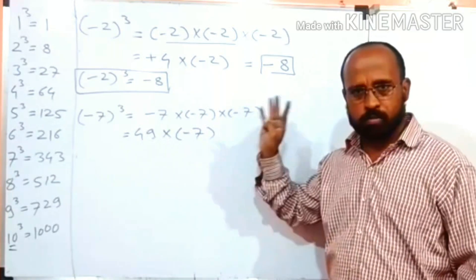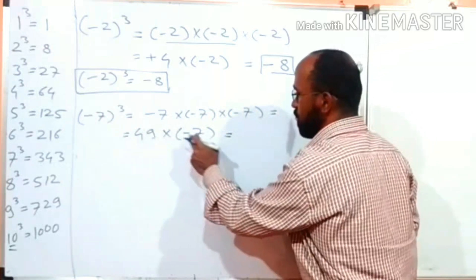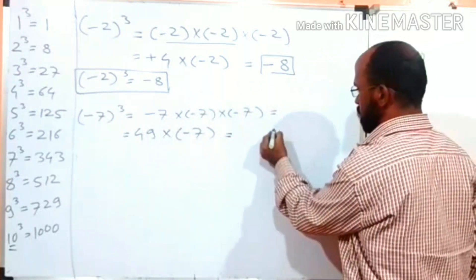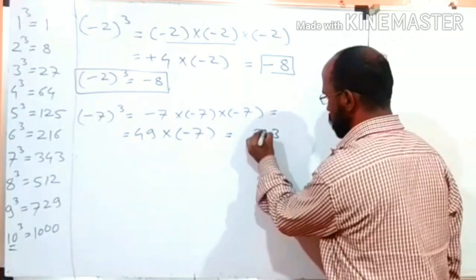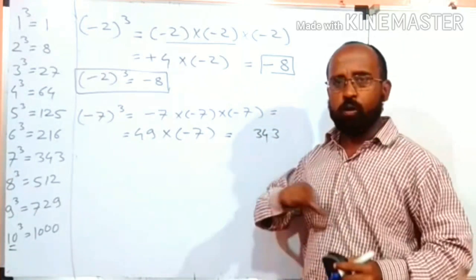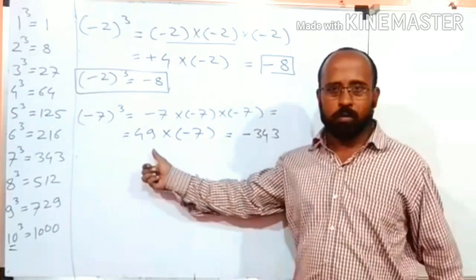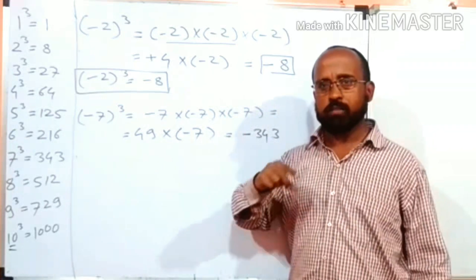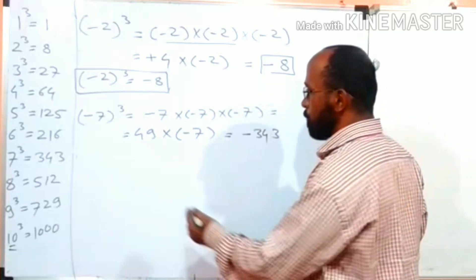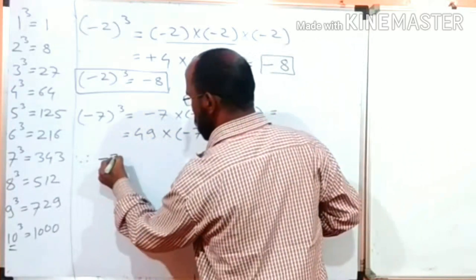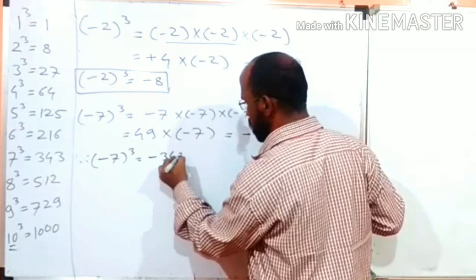Positive 49 multiplied by minus 7. Multiplication of these two numbers: 7 nines are 63, 6 is the carry; 7 fours are 28, plus 6 is 34. So the result is 343. What is the symbol? Plus times minus is minus. While multiplying two numbers, if the symbol of both numbers is different, the symbol of the answer is always negative. Therefore, minus 7 cubed is equal to minus 343.